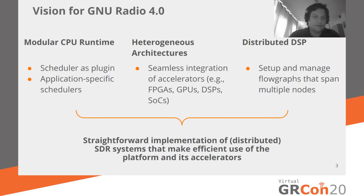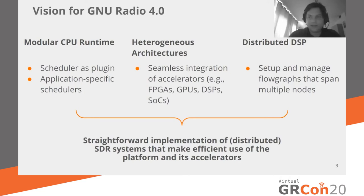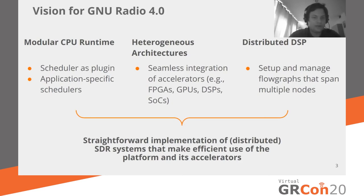In my opinion there are three main areas for improvement. First, the CPU runtime — running an SDR system on a CPU is what GNU Radio is famous for. In the future, we want a runtime where the runtime and scheduler are not so closely entangled but have a clearly defined interface allowing us to plug in different schedulers. For example, one optimized for latency, another for bandwidth, or one for a specific application. Second is heterogeneous architectures — seamless integration of accelerators like FPGAs, GPUs, or DSPs. We know there's RFNOC and out-of-tree modules like GR-CLEnabled that use the GPU, but all of them are not really natively integrated — they're kind of hacked in, and there's always a performance penalty because GNU Radio's runtime doesn't know about anything beyond its fixed buffer implementation.